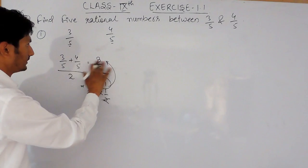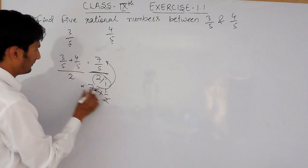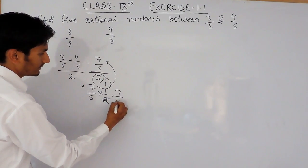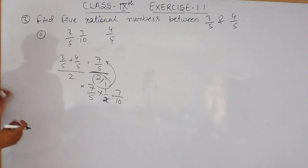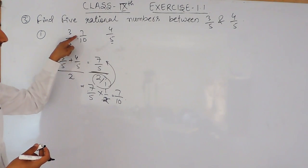Sorry, this will be 7. 4 plus 3 is 7 and this will remain as it is. This will become 7 upon 10, so the first number will be 7 upon 10. After that, again you have to add these two numbers and divide by 2 and you will get another rational number between these two rational numbers.